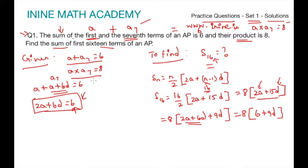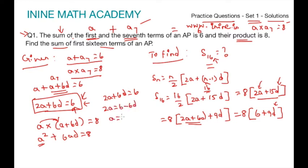Good enough. Let me use a into a7 equal to 8 to find the value of d. I can write a into a plus 6d equal to 8. Multiplying a inside we will get a square plus 6ad is equal to 8. Since I need only the value of d, let us write a in terms of d. This can be done with this equation. You can write 2a plus 6d equal to 6 or 2a equal to 6 minus 6d or a equal to 6 minus 6d whole divided by 2, which leaves us with 3 minus 3d. So a is equal to 3 minus 3d. Let us substitute a equal to 3 minus 3d in this equation.